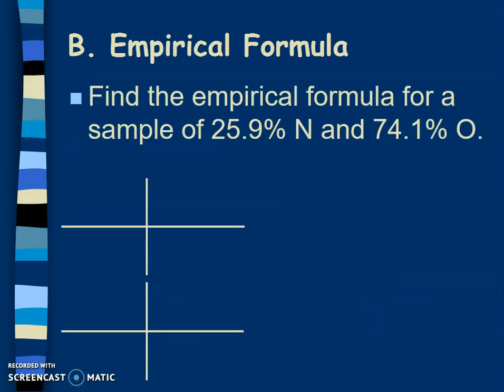Let's look at an example. Find the empirical formula for a sample that is 25.9% nitrogen and 74.1% oxygen. You've been given percentages here, and we can turn those right into grams. Because if we had a sample that was 25.9 grams of nitrogen and 74.1 grams of oxygen, then that percentage would still be the same. We can replace the percent sign with a gram - it's a direct conversion that we can do.